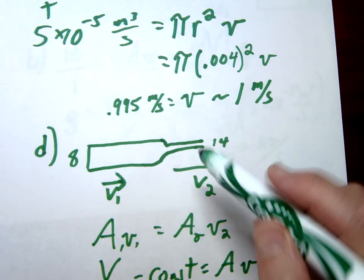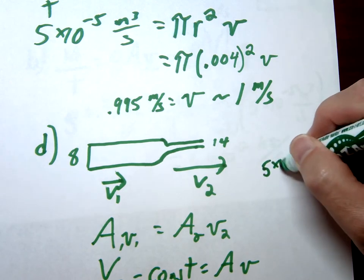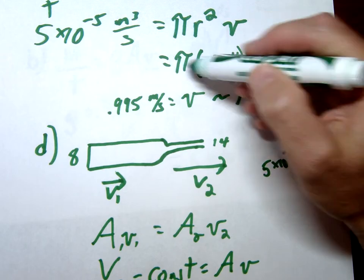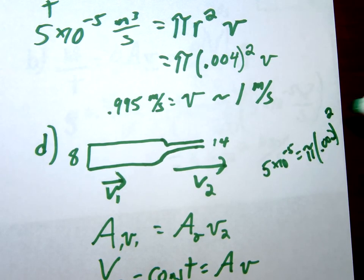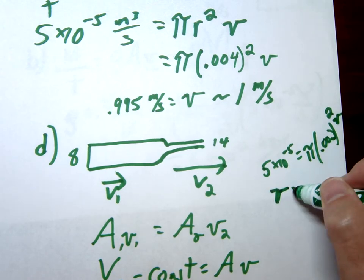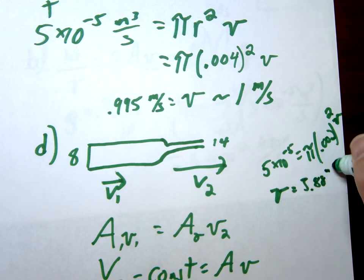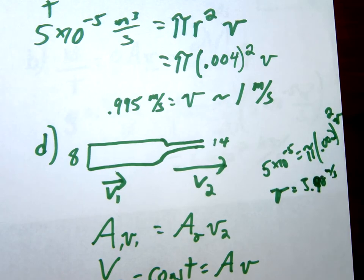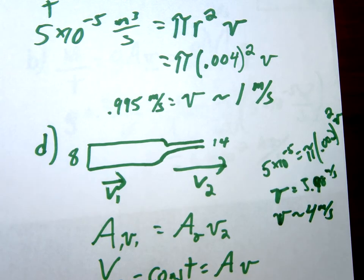So we're going to have essentially everything the same that we have up here. Right? Here, I'll do it over here. 5 times 10 to the negative 5th equals, let's just skip down to here, pi. And this time it's going to be 0.002 squared times velocity. And when you solve for this velocity, alright, plug it in, I get a 3.9898 or approximately 4.